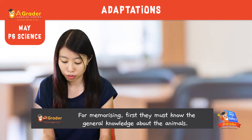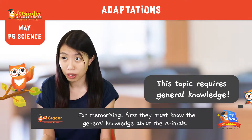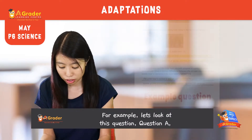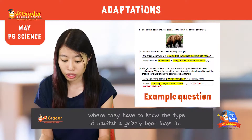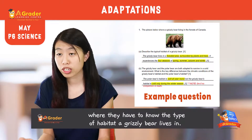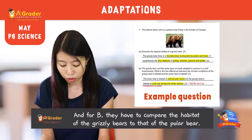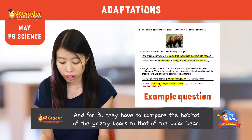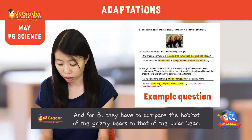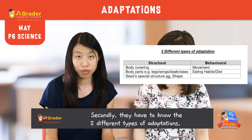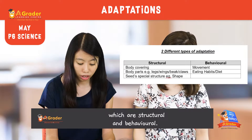For memorising, the first thing they have to know is the general knowledge about the animals. For example, looking at Question A, they have to know the habitat the grizzly bears live in. And for Question B, they actually have to compare the habitat of the grizzly bears and the polar bear. Secondly, they need to know the two different types of adaptations, which are structural and behavioural.